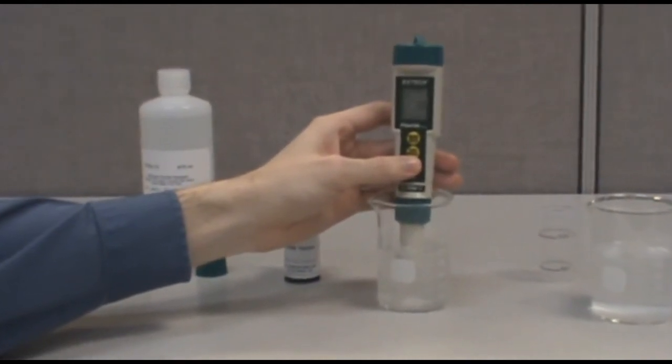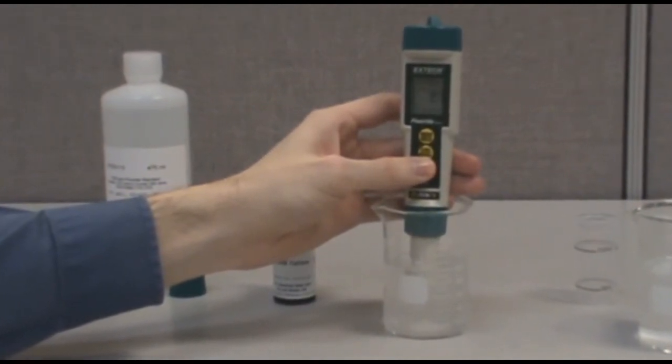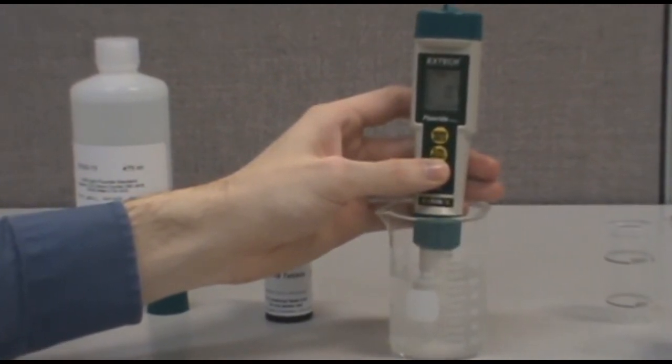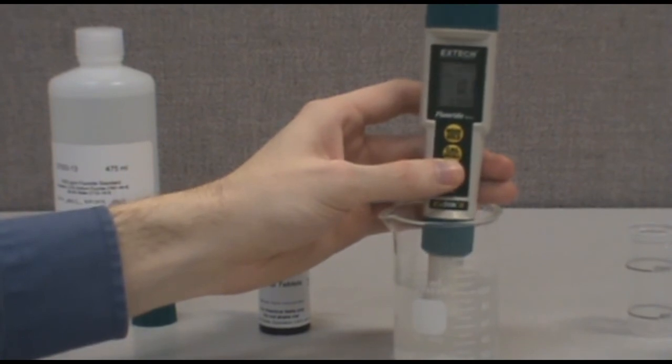Our sample reads 0.7 parts per million. Please note that your reading will be different from the value we have shown, since different water supplies will have different fluoride values.